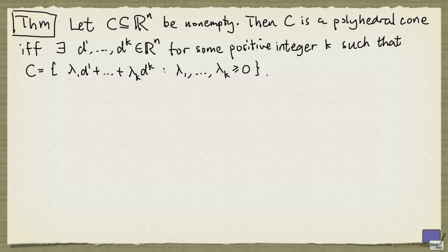If C is a non-empty subset of R^n, then C is a polyhedral cone if and only if there exists d^1 up to d^k in R^n, where k is a positive integer, such that C can be written as λ_1 d^1 + ... + λ_k d^k, where λ_1 up to λ_k are non-negative real numbers.